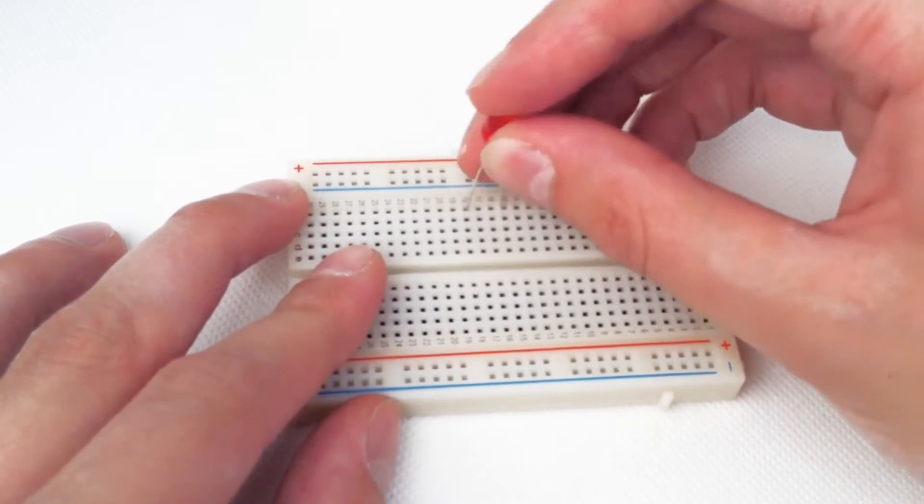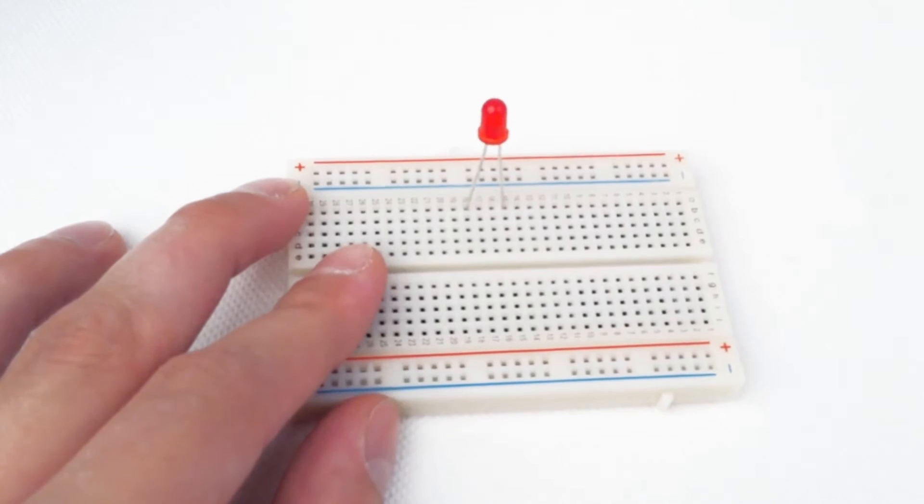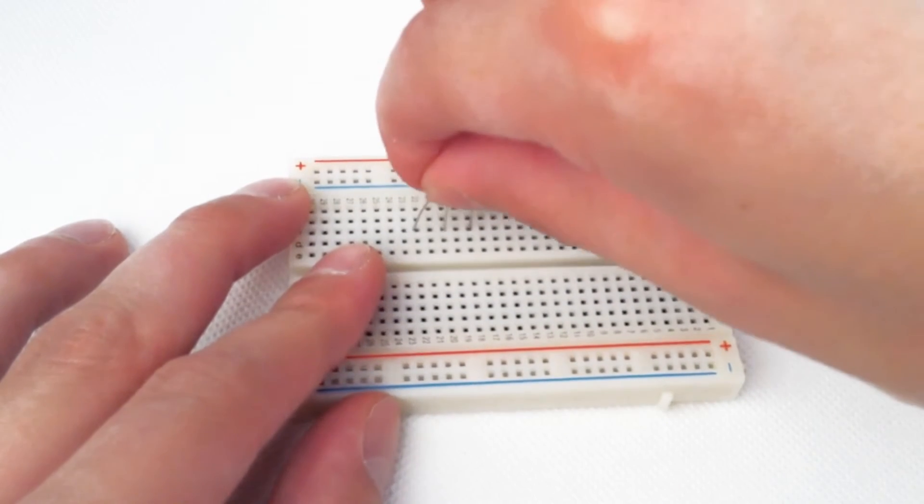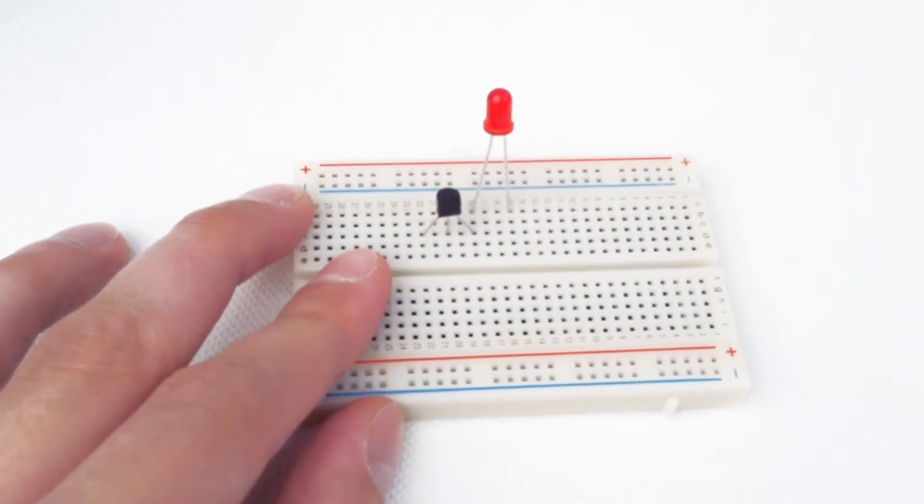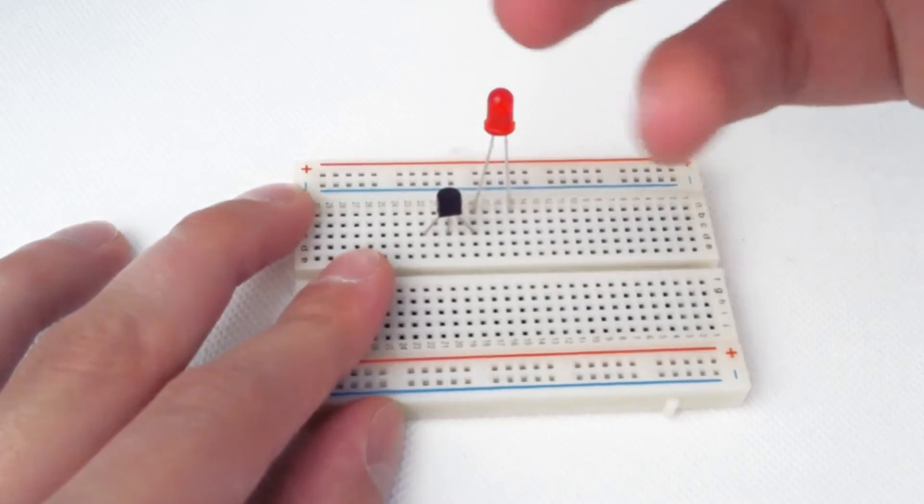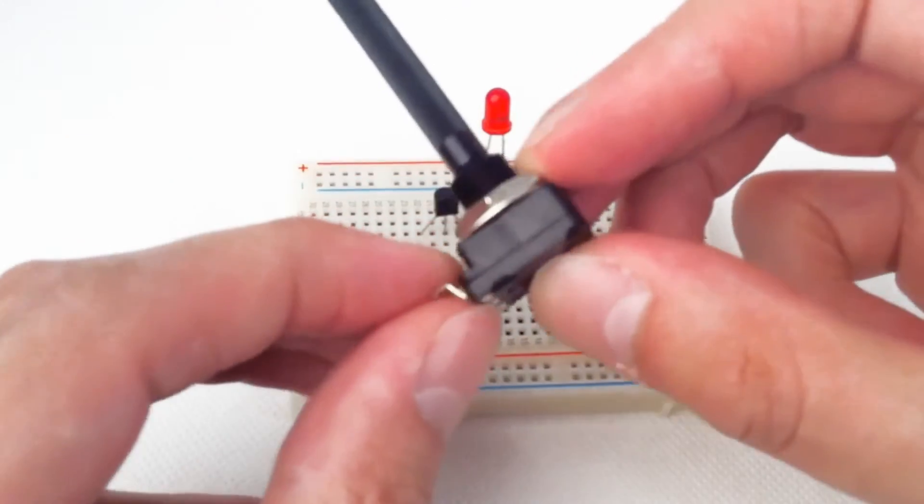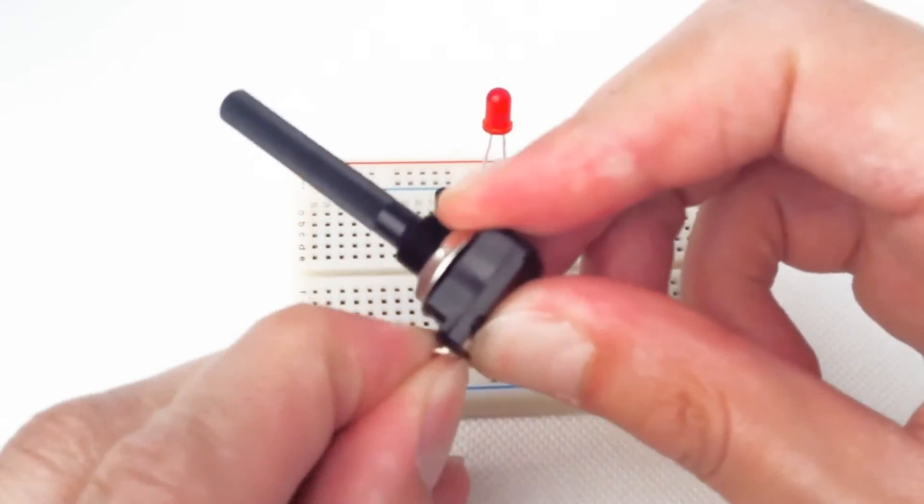Connect our transistor - we'll connect the end terminal to the anode or positive terminal of the LED. Our potentiometer - make sure the legs are nice and flat so it goes in easy.